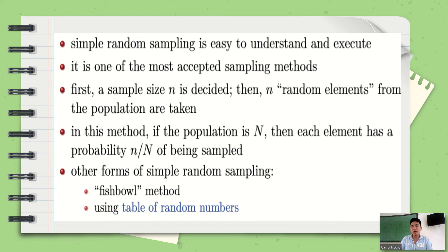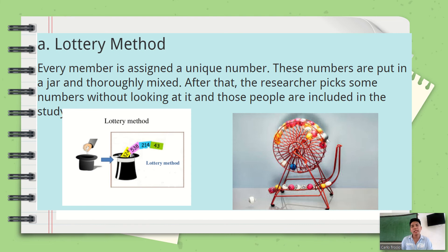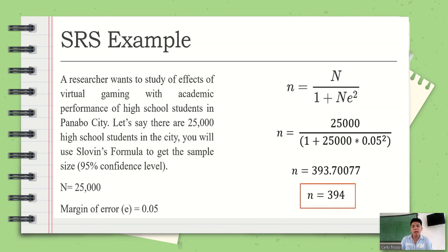Other forms of simple random sampling include the fishbowl method and the table of random numbers. The lottery method works like lotto — you pick numbers out of a bowl. In simple random sampling, you are not going to decide by yourself how many respondents to select.